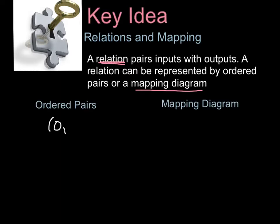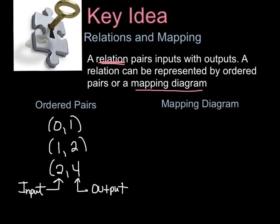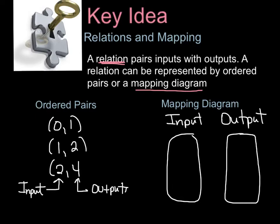So ordered pairs would look like (0,1), (1,2), and (2,4), where your x values are your inputs and your y values are your outputs. Now a mapping diagram is taking the input and output and making a little chart that shows the x values, 0, 1, and 2, and your y values, 1, 2, and 4, and then you map them. Because the ordered pair is 0,1, we draw an arrow from 0 to 1. We draw a mapping diagram from 1 to 2, and the same thing goes from 2 to 4.